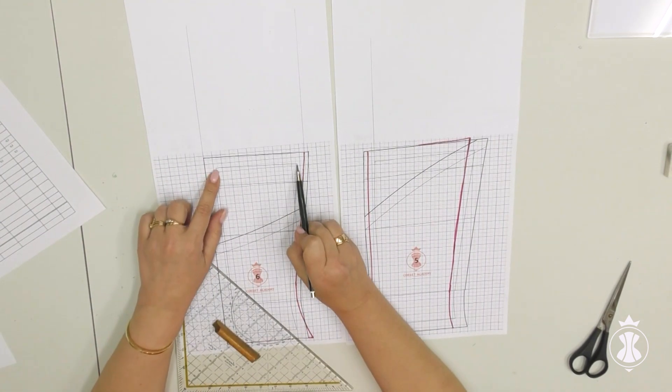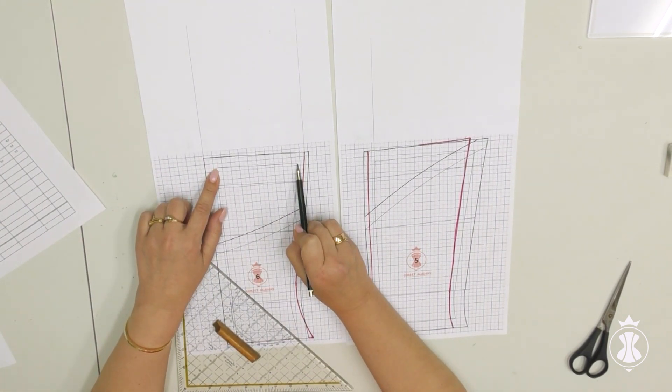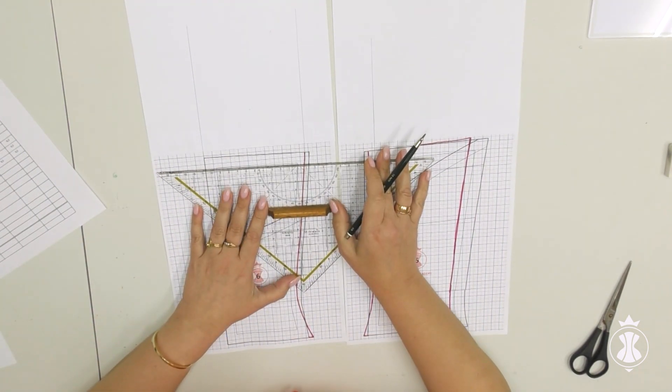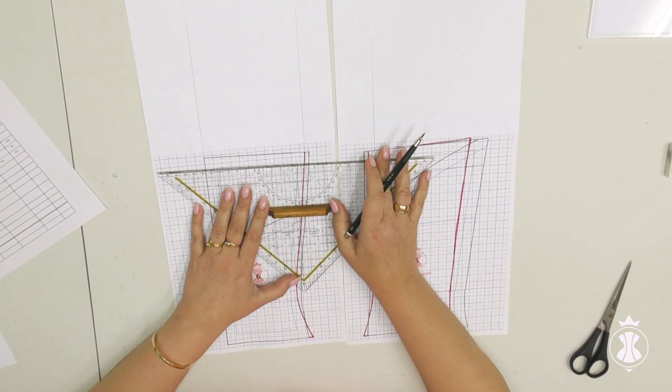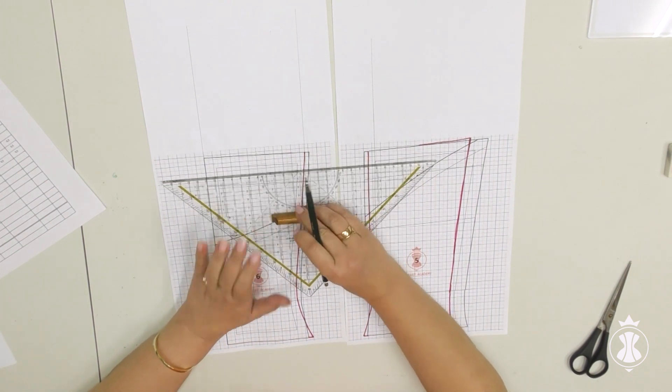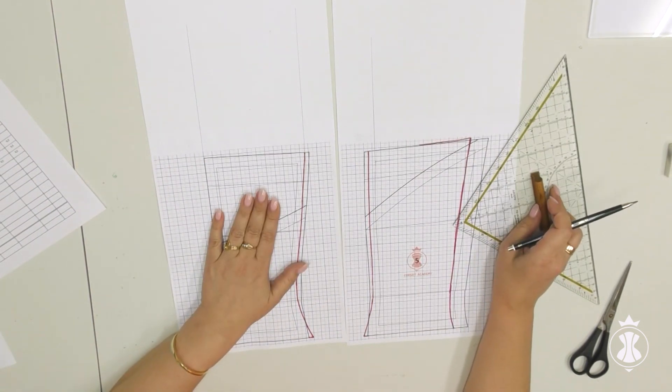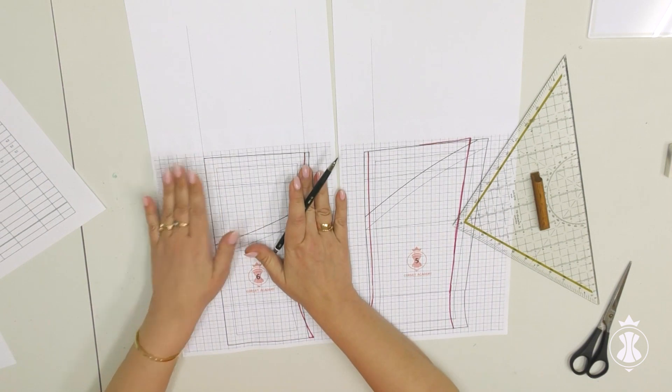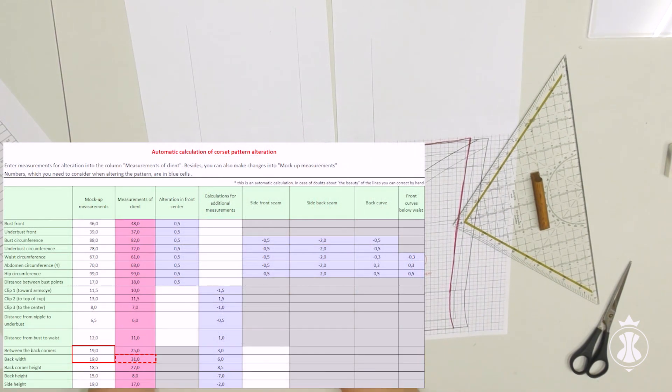If the measurements of the client are 25 cm for between back corners and 31 cm for back width, let me explain. If we measure the length of the upper cut of the initial pattern of the back center, it will comprise 9.5 cm. If we attach the second similar central pattern without seam allowances, we receive 19 cm for the upper back cut on the initial pattern.